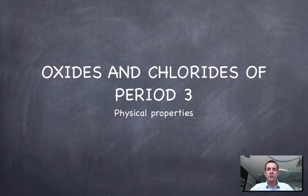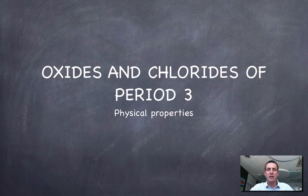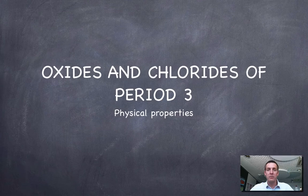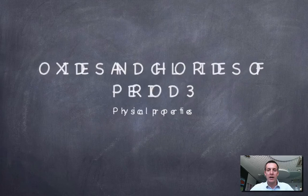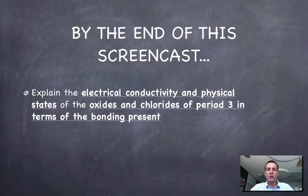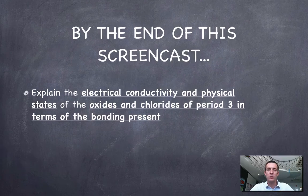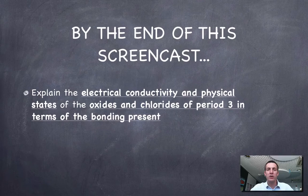Hello and welcome to this film which is all about the oxides and chlorides of Period 3, and in particular their physical properties. It's the first in a series of five films about the high level periodicity topic in the IB Diploma. Hopefully by the end of this film you'll be able to describe the electrical conductivity and the physical states, or more precisely their melting and boiling points, of the oxides and chlorides in Period 3, and also to explain them in terms of their physical properties.